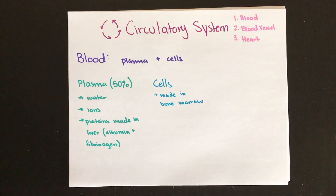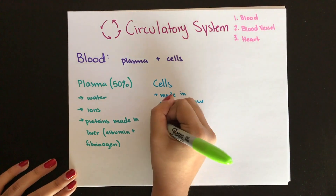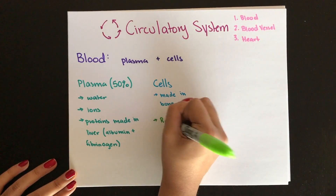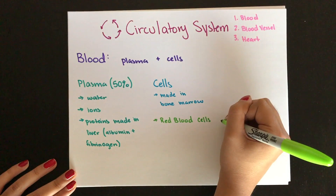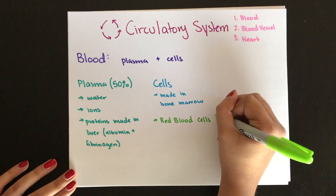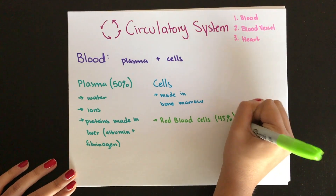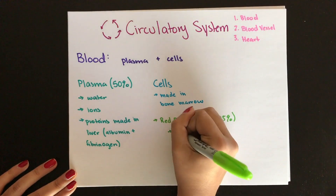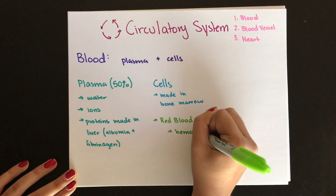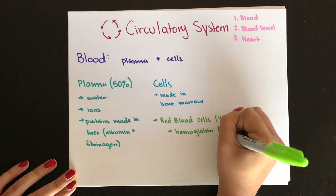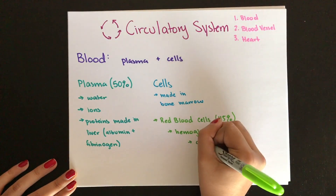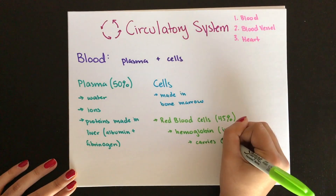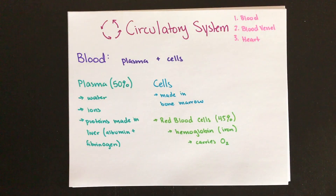The first type of cell we're going to talk about is the red blood cell, which composes 45% of the total blood volume. These are filled with hemoglobin, a protein made with iron that helps carry oxygen in your body.